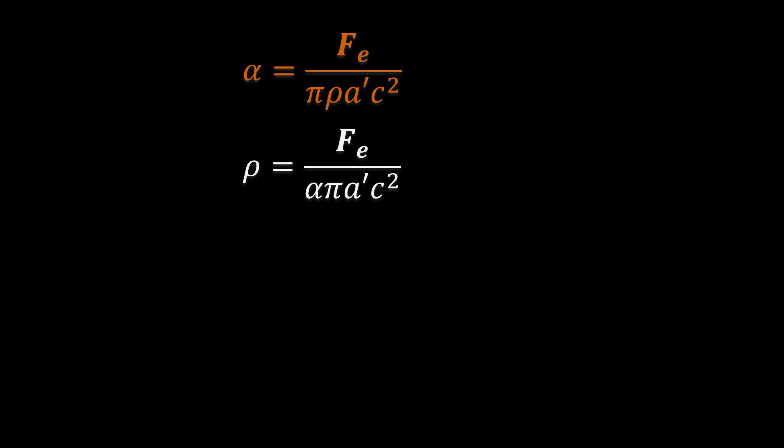Area times volume density is equal to linear density. So we can also write alpha equal to f_e over pi times mu times c squared. The term in the denominator has units of force. And since the wave we have been analyzing is a light wave, this force must be the force exerted by a photon of light. So we can write alpha equal to f subscript e — the force that a moving electron in the ball radius of the hydrogen atom will exert — over f subscript p, the force that a single photon will exert.